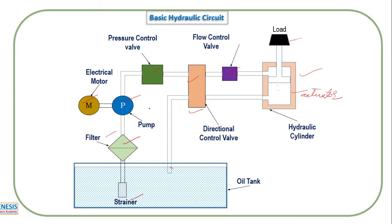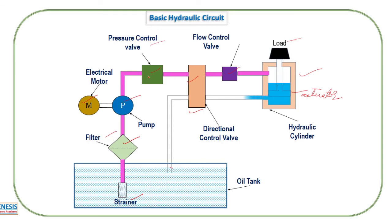See how the fluid moves: it starts its journey from the strainer, passes through the filter, and the pump pressurizes the fluid. It goes to the pressure control valve, and if there is any excess pressure it is directed to the outlet and tank. That is all about the hydraulic circuit. Don't miss this opportunity to watch. Thank you for watching this video. Please subscribe to this channel to get more videos on fluid power control systems.